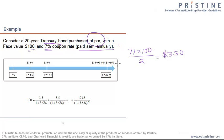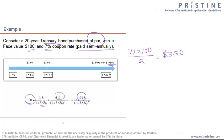It pays $103.50 at maturity. If you take the present value of all future cash flows at 7% per year, or 3.5% every six months, then you get $100.